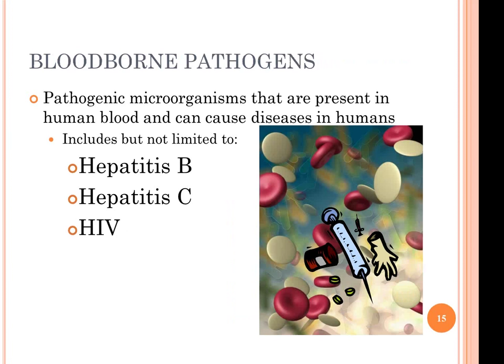Blood-borne pathogens include hepatitis B, C, and HIV. We mentioned hepatitis A earlier — that is transmitted via fecal-oral contamination — but hepatitis B, C, and HIV are blood-borne pathogens.